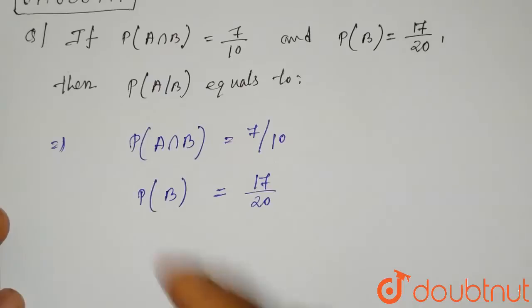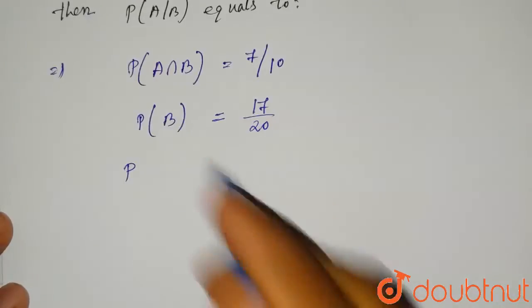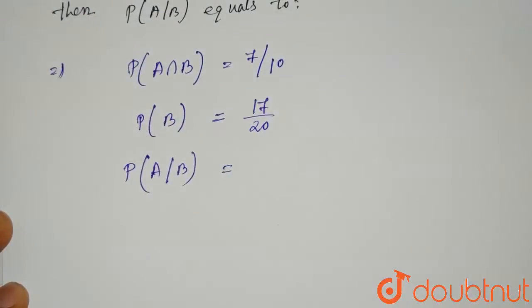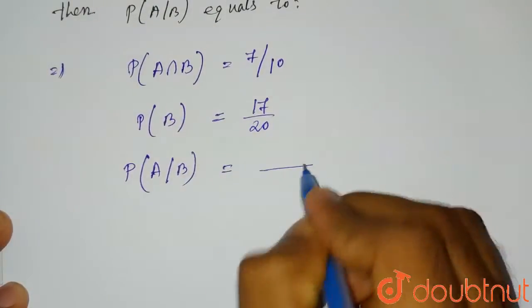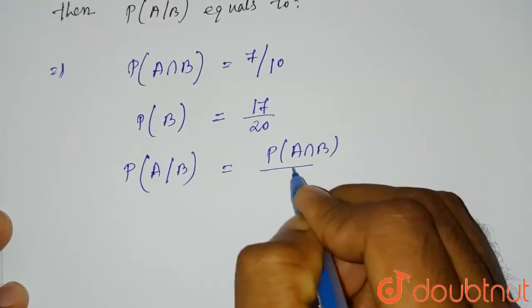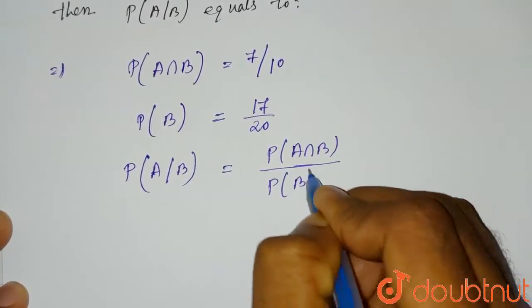These two values are given and we have to find out the value of P of A given B. Now P of A given B can be written as the formula: P of A intersection B divided by P of B. This is the formula.